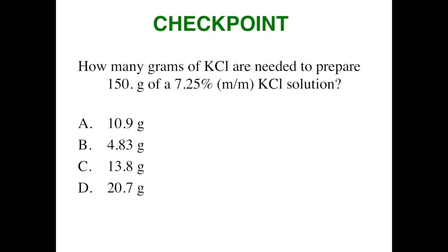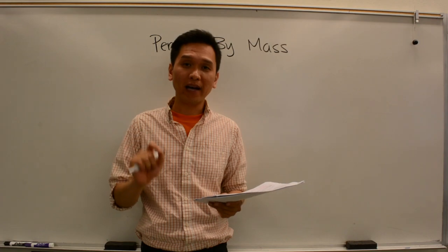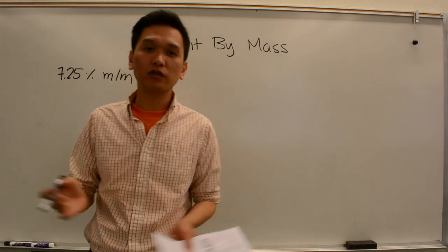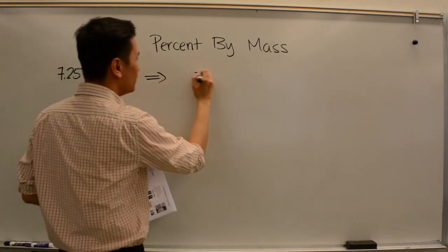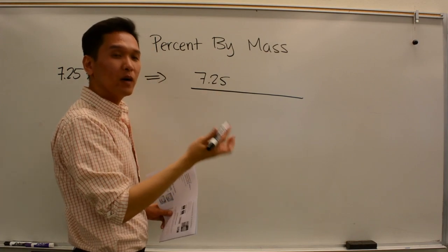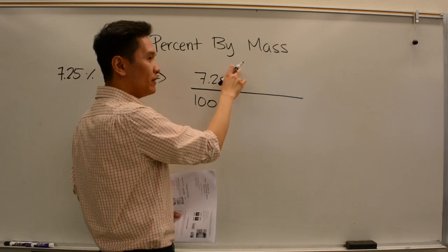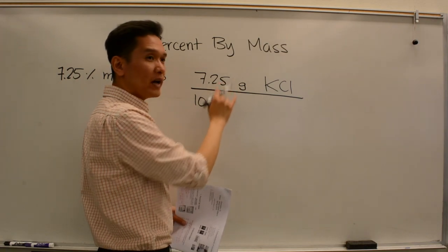Let's do a checkpoint. How many grams of KCl are needed to prepare 150 grams of a 7.25% mass over mass KCl solution? We know the percentage and the mass of the solution, and we need to find the mass of the solute. Remember that the concentration can be written as a conversion factor. Since 7.25% means 7.25 per 100, and going back to the definition — mass of solute over mass of solution — we can write this as 7.25 grams KCl per 100 grams of solution.